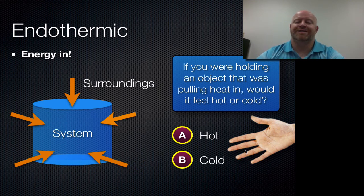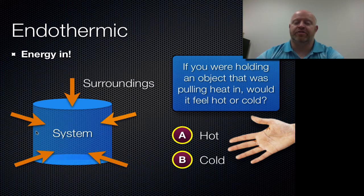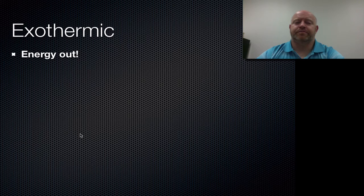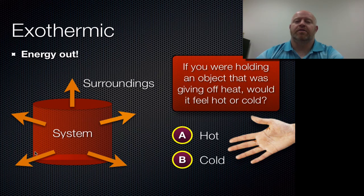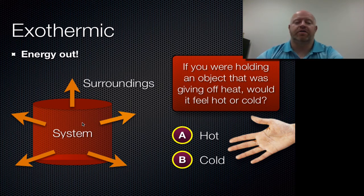Just because it feels hot or cold to us doesn't necessarily mean it has to be endothermic or exothermic — it does in reference to our hand, but for the process itself you always ask one question: is the system taking energy in or releasing it? Any time energy gets pulled in, it has to be endothermic. If you flip that idea to exothermic, any time the system is releasing energy — pushing energy out — that's exothermic. If something is exothermic, our hand is part of the surroundings. The system releases heat energy; our hand absorbs that energy and feels hot.